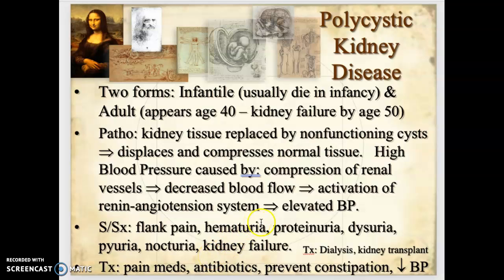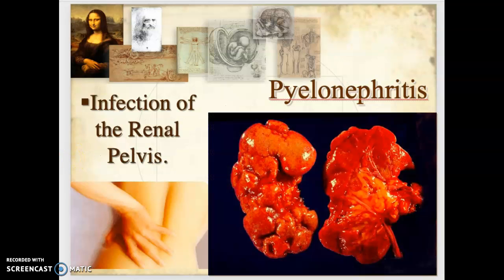Signs and symptoms of polycystic kidney disease include flank pain, hematuria, proteinuria, dysuria, pyuria (pus in urine), nocturia, and eventual kidney failure. Treatment involves dialysis or kidney transplant, pain medications for the compressed tissue, antibiotics for infection, stool softeners to prevent constipation, and antihypertensives to control blood pressure.